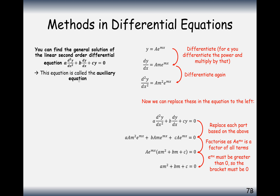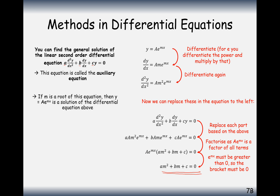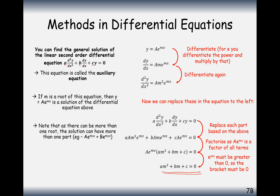So this gives us what's called the auxiliary equation: a m squared plus b m plus c equals zero, using the same coefficients a, b, and c as in the second order differential equation. If m is a root of this equation, then y equals A e to the mx is a solution. Generally we'll get two solutions because it's a quadratic, and we can add the two solutions together — both will cancel out to zero. We'll show this once we've done a practice question.